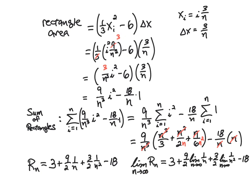Now we take the limit as n → ∞. The 3 and −18 are constants and stay the same. The limit of 1/n as n → ∞ is 0, and the limit of 1/n² is also 0. So those terms vanish, and we're left with 3 − 18 = −15.